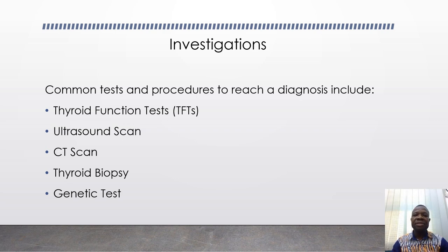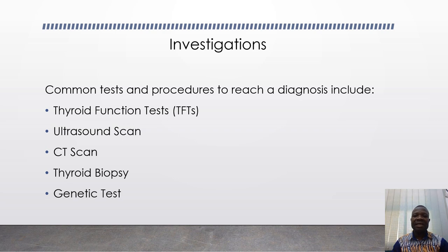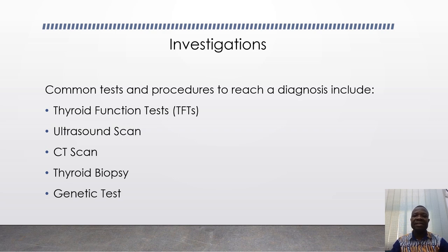Thirdly, a CT scan could be done — these are scans done to determine whether the tumor has spread to nearby structures or distant areas. There is also thyroid biopsy, or thyroid fine needle aspiration cytology, where a small sample of the thyroid tissue is taken and sent to the laboratory for processing and examination under the microscope. We also have genetic tests, which help find out whether a person has genes that increase their chance of getting thyroid cancer.